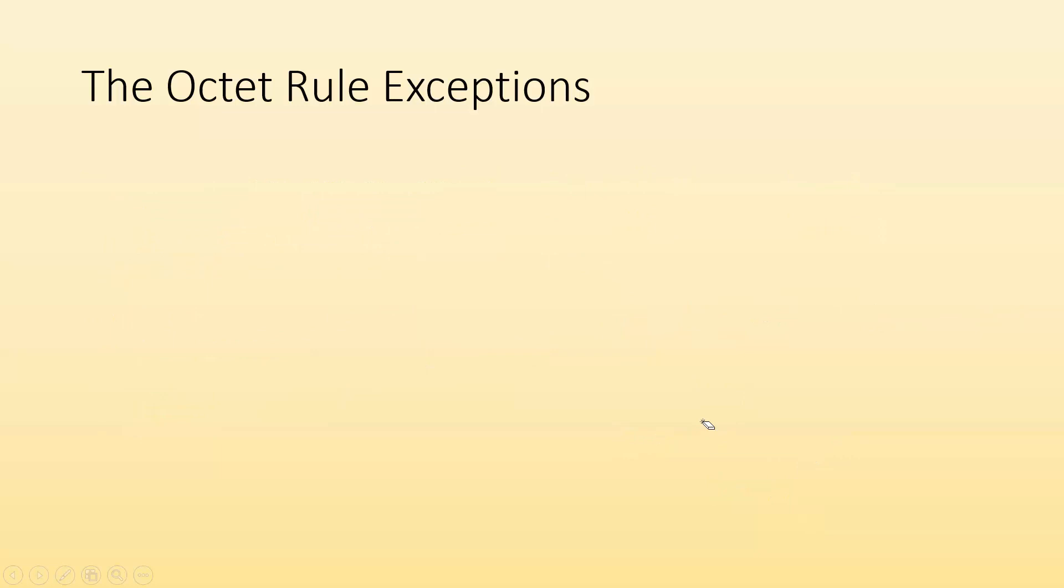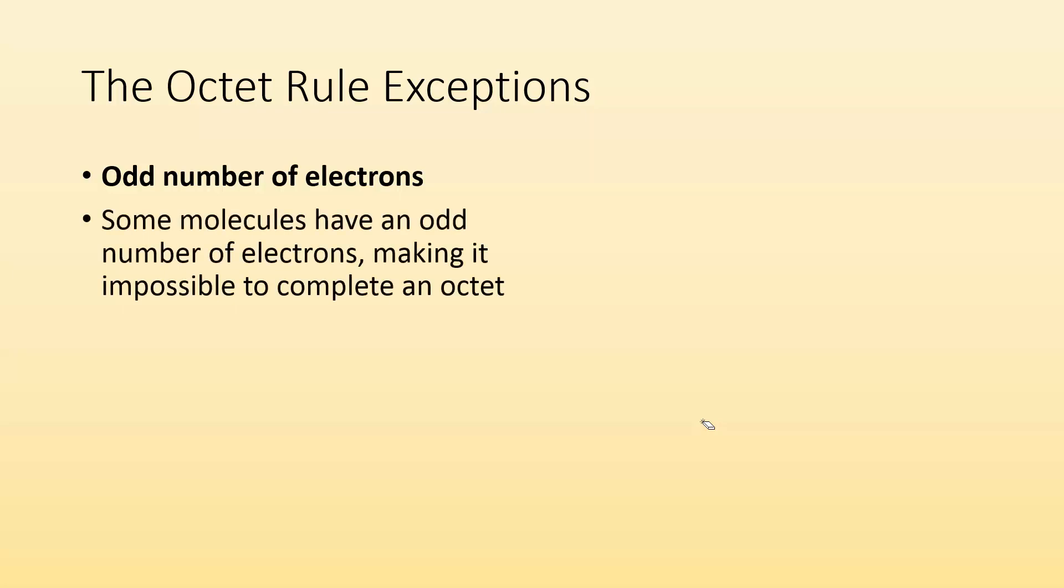So let's talk about exceptions. First exception is going to be when you have an odd number of electrons. Some molecules have an odd number of electrons, making it impossible to get a complete octet. You can't get the eight if you have an odd number. No way you can do it.